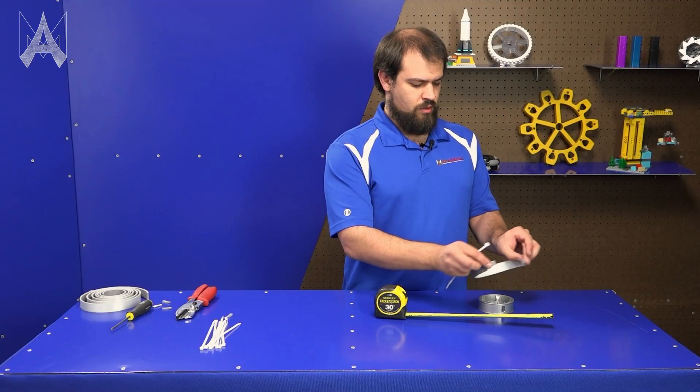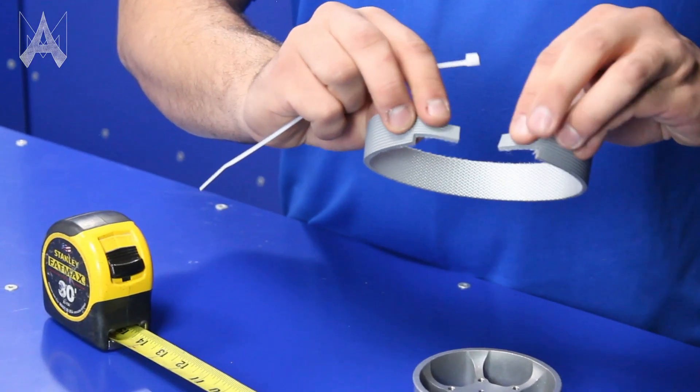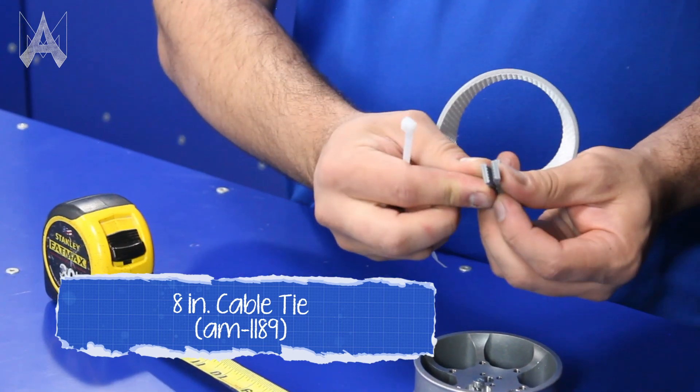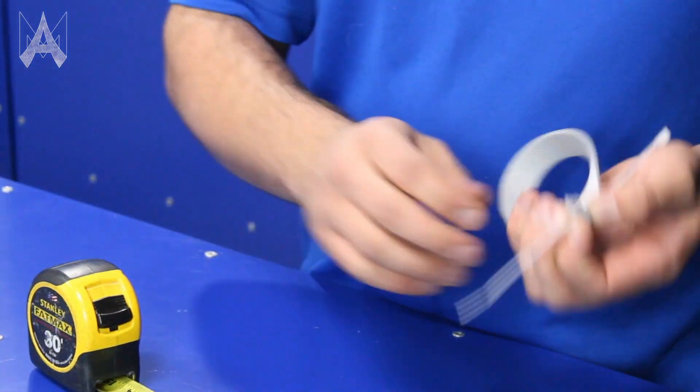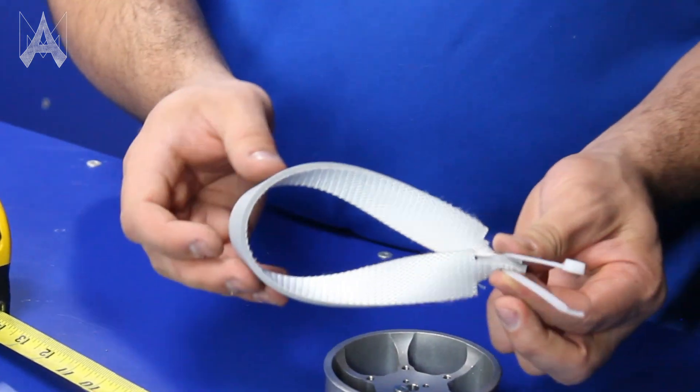Take your tread, fold it around in this shape and then fold the tabs into each other so the treads are touching. Then flip it like that so you can access it. Now pass the zip tie through both slots so your loop should look something like this.